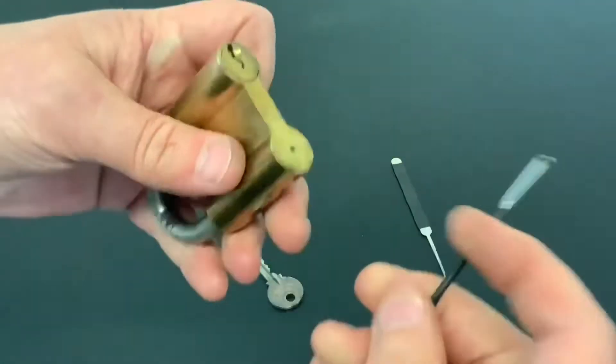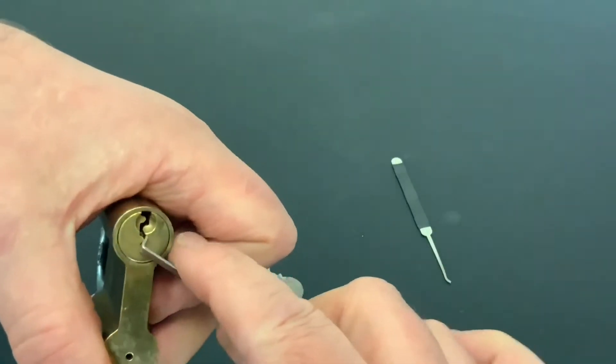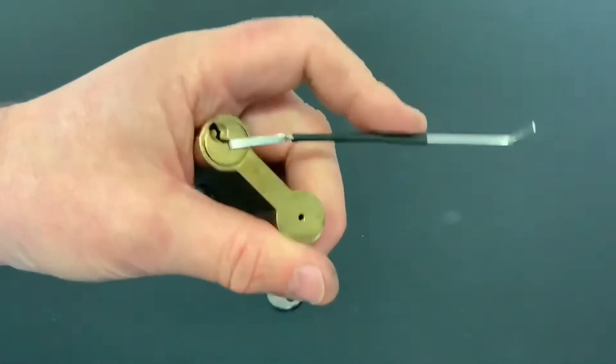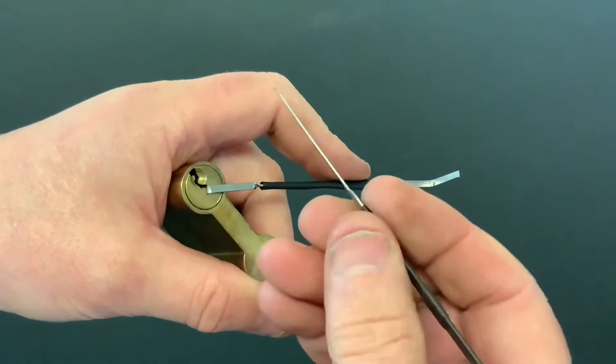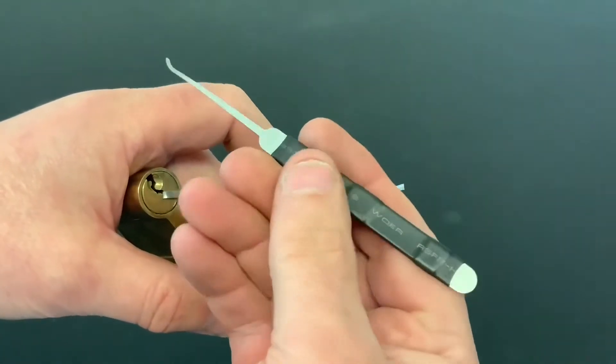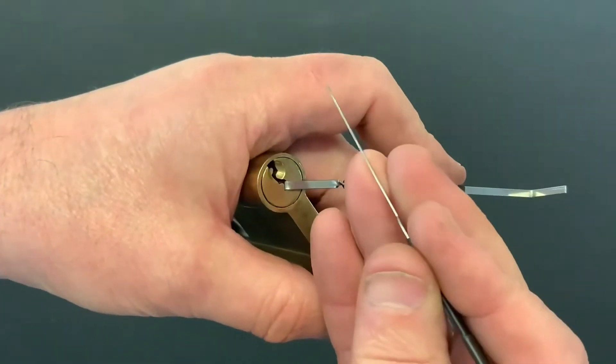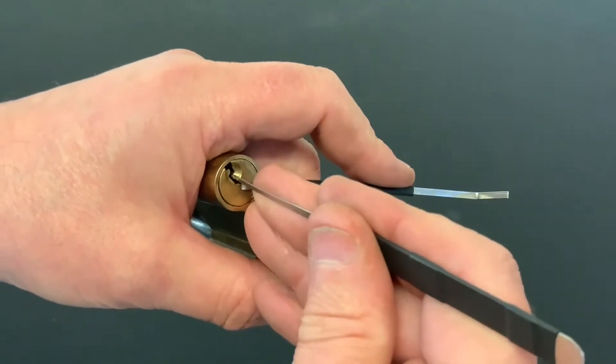Right, so let's have a look if we can pick it open. So I'm just going to use a homemade tension tool and this little pick. I think this is a Southord. I can't remember now. Anyway, it's one of the thinner gauges so it works in here okay.